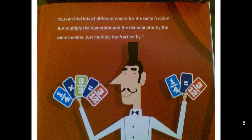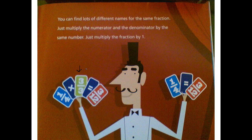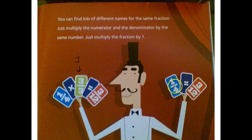Just multiply the numerator and the denominator by the same number — just multiply the fraction by one. Remember, even though three-thirds doesn't look like a one, because the numerator and the denominator are the same, it is equal to one. So one-fourth times three-thirds equals three-twelfths. It's like a magic show — our one-fourth now looks like three-twelfths, but they're technically the same amount.